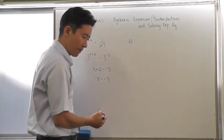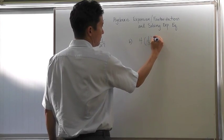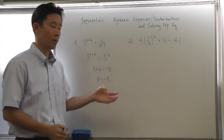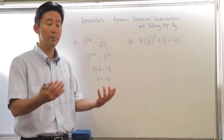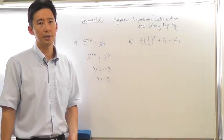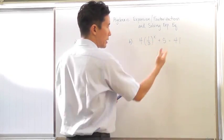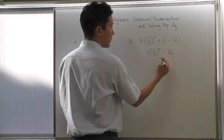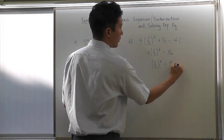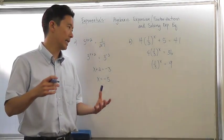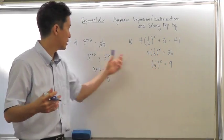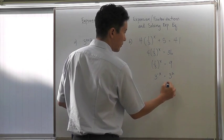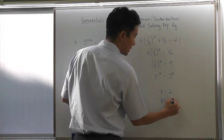Let's look at another example: 4 times one-third to the x plus 5 equals 41. This one is more complicated, but the idea is to simplify it to an equivalent form. We subtract 5 from both sides to get 4 times one-third to the x equals 36, then divide both sides by 4 to get 9. Notice this simplifies to a problem we've already done: one-third to the x equals 9. This becomes 3 to the negative x equals 3 squared, so negative x equals 2, meaning x equals negative 2.